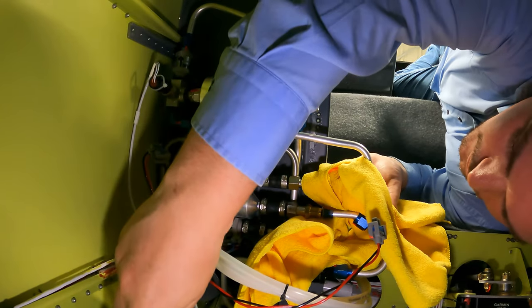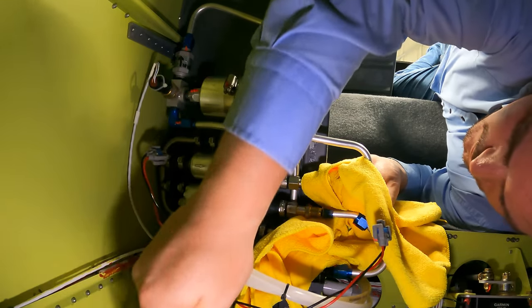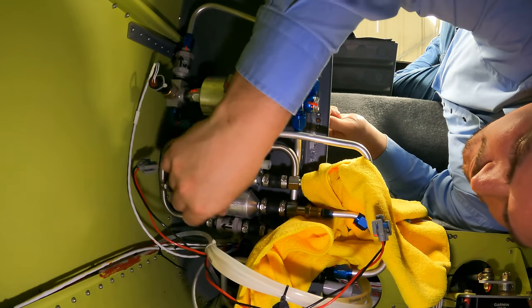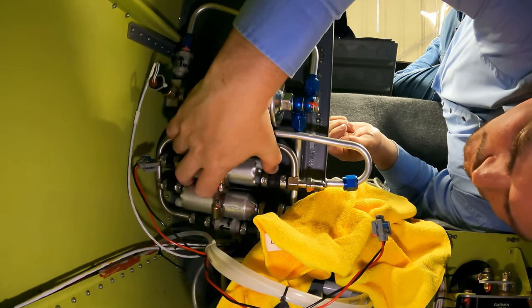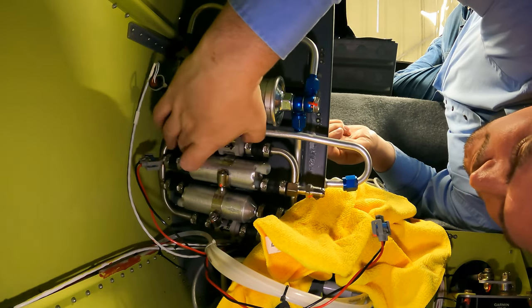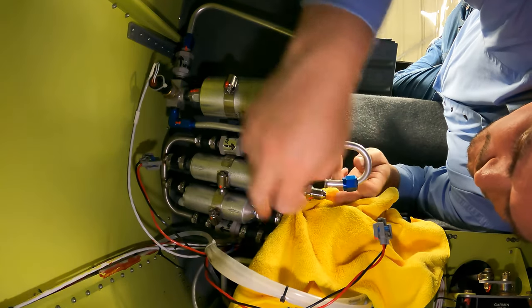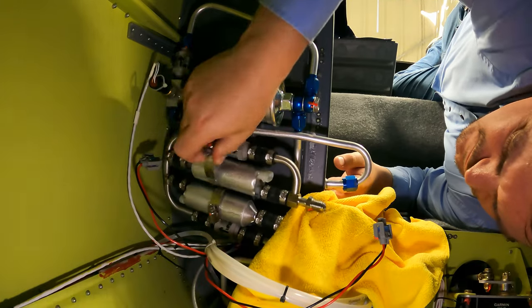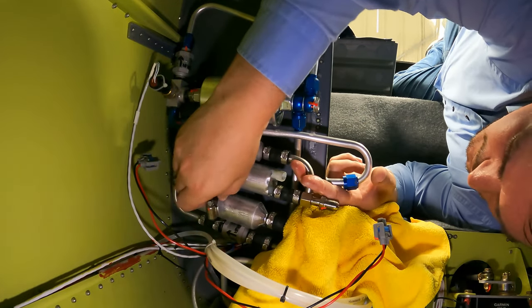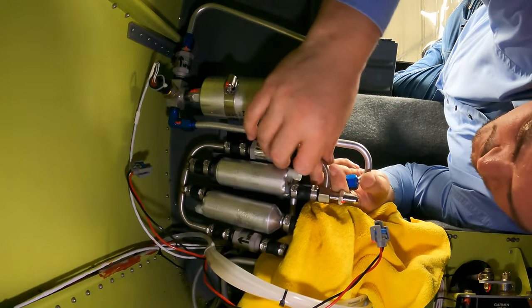Again here it might be tempting to use a screw gun to undo these hose clamps, but with these fuel fumes lingering in the tail cone here, there's no sense in risking that. Once you've completely undone these hose clamps you can just pull them out. You'll bend them a little bit but you can always bend them back into the right shape afterwards. The key here, as is the key every time you go into the tail cone, is to make sure you go in having the right tools. Last thing you want to do is get in and realize you don't have a screwdriver.